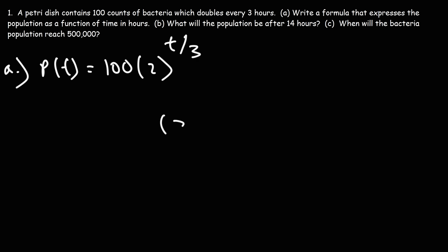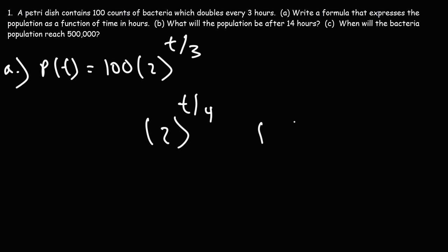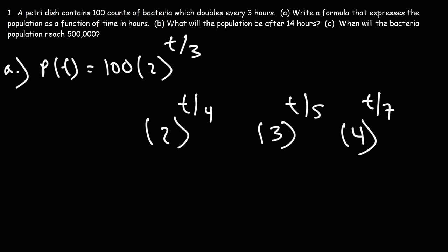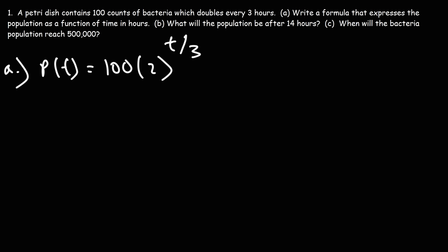In 3 hours, the exponent becomes 3 over 3, which is 2 to the first power. 100 times 2 to the first power gives 200 — it doubles. If the problem said it doubles every 4 hours, this would be 2 to the t over 4. If it triples every 5 hours, the growth factor is 3 and it would be t over 5. If it quadruples every 7 hours, it's 4 raised to the t over 7. So that's how you write the formula when the statement changes. That's the formula expressing population as a function of time in hours.